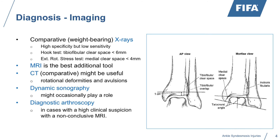X-ray has tools where you can take measurements such as the tibiofibular clear space and the medial clear space, as mentioned on this slide. It is helpful — again, it's not pathognomonic — but in cases where clear instability occurs, you can identify already on a simple x-ray whether it's stable or not.